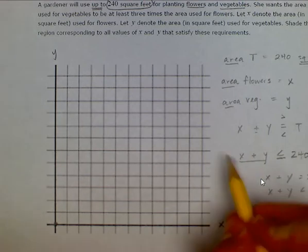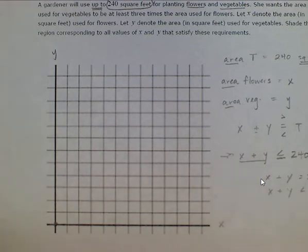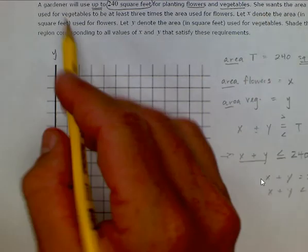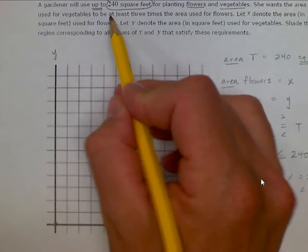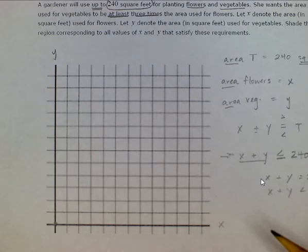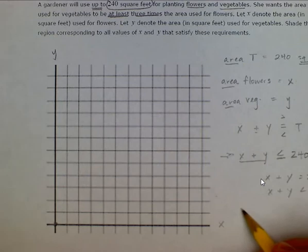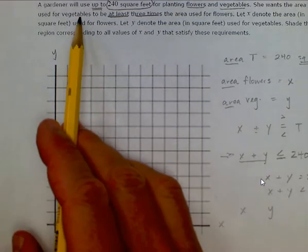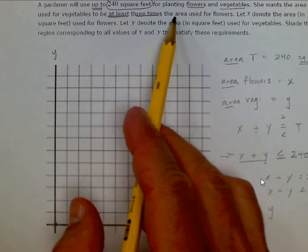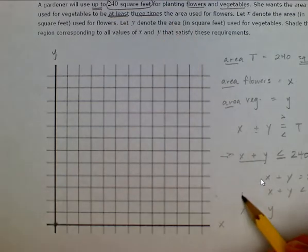So we have one of our inequalities. Now for the second inequality: it says she wants the area for vegetables to be at least — key words — at least three times the area used for flowers. So we're comparing the area for flowers x and vegetables y, and y needs to be at least three times the area used for flowers x. She wants flowers to be the smaller area.